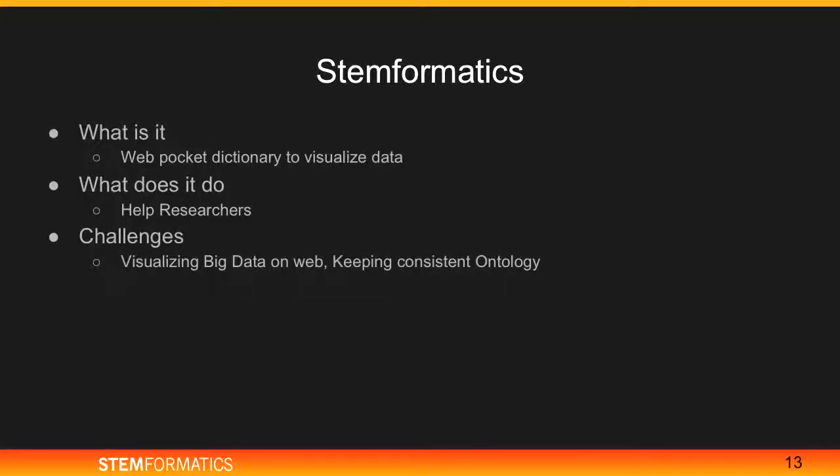Second is Stimformatics, the main component of the Stimformatics ecosystem. Stimformatics is a web-based pocket dictionary that lets you visualize and explore your data as well as other people's public datasets. It was built to cater to the needs of biologists to explore, visualize data, and perform analysis. At Stimformatics, you can view the gene expression profile by choosing your favorite gene and dataset, as well as view gene expression profiles across datasets — because it's very important for biologists to compare gene expression not just within one dataset but across datasets. You can also perform analysis such as generating heat maps.